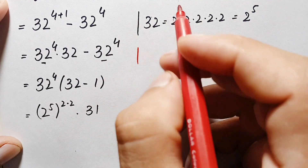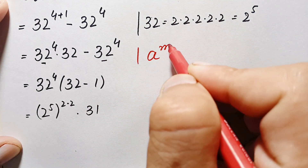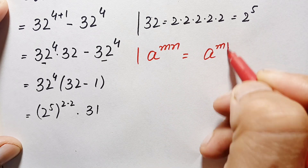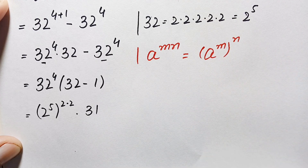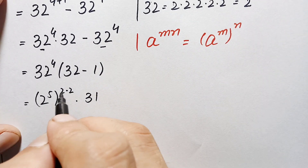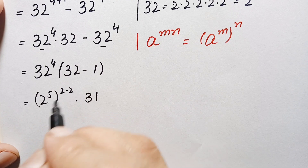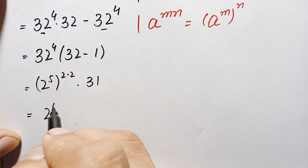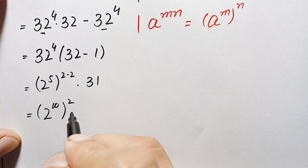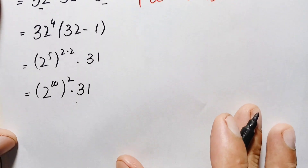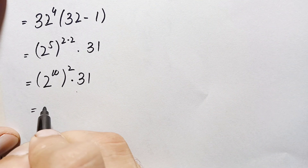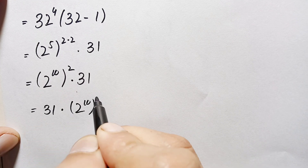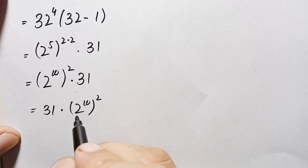Now in this term we will use another exponential identity: a raised to power m, whole raised to power n, equals a raised to power m times n. Using this identity, we multiply the powers 5 and 4, giving us 2 raised to power 20. So this expression becomes 31 times 2 raised to power 10, whole squared. Next we need to find the value of 2 raised to power 10.